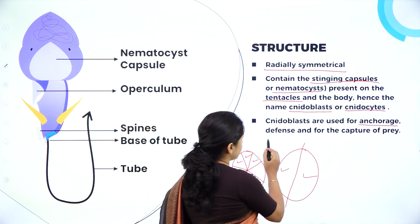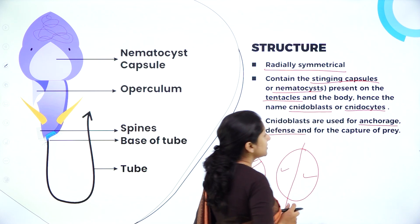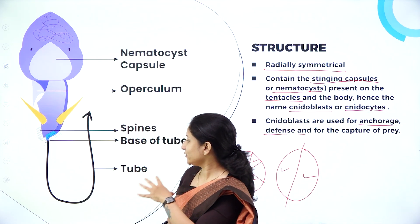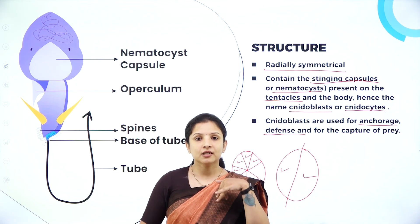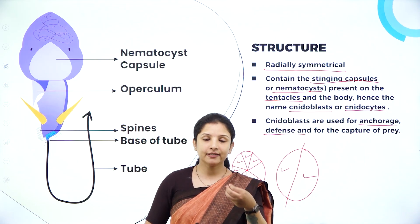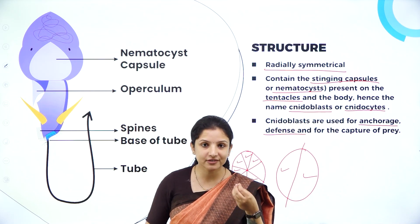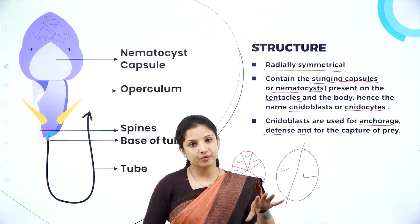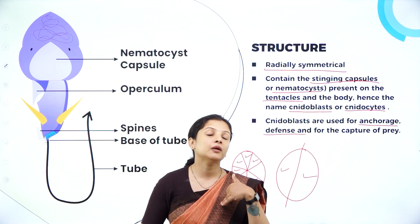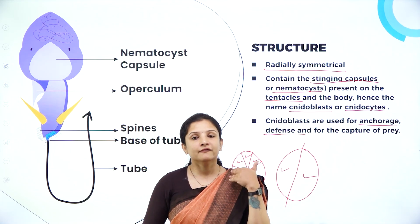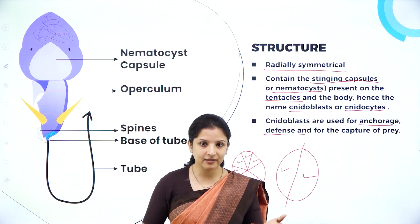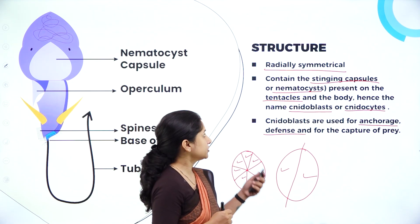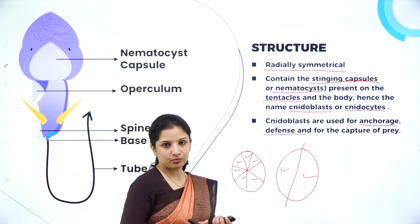The second function is defense — especially for capturing prey. They use cnidoblasts or cnidocytes, which are essentially poison capsules, wherein they inject poison into another organism, making it fall unconscious or get paralyzed, so that they can easily catch it as prey and feed on it. These are the two functions of the cnidoblasts.